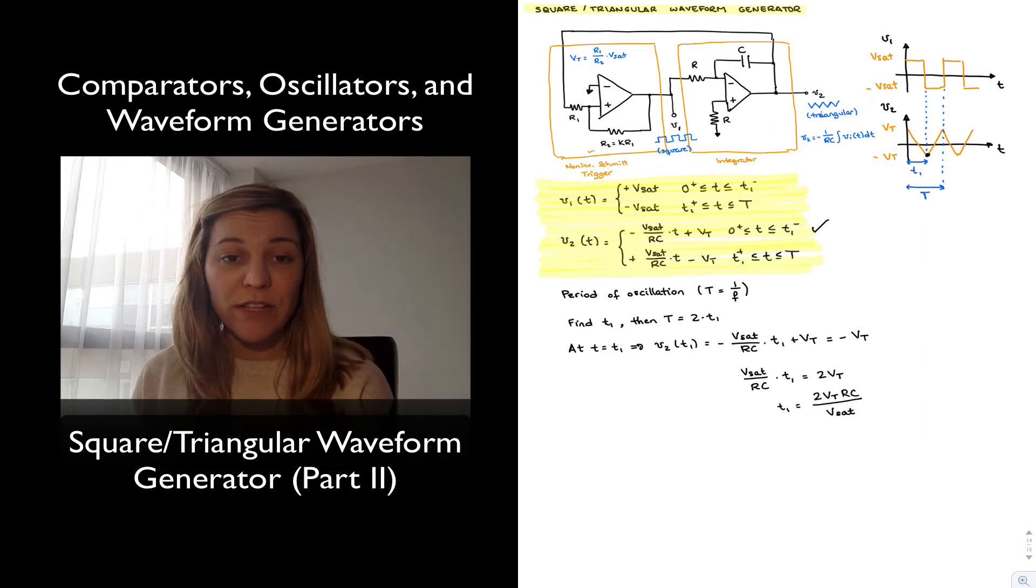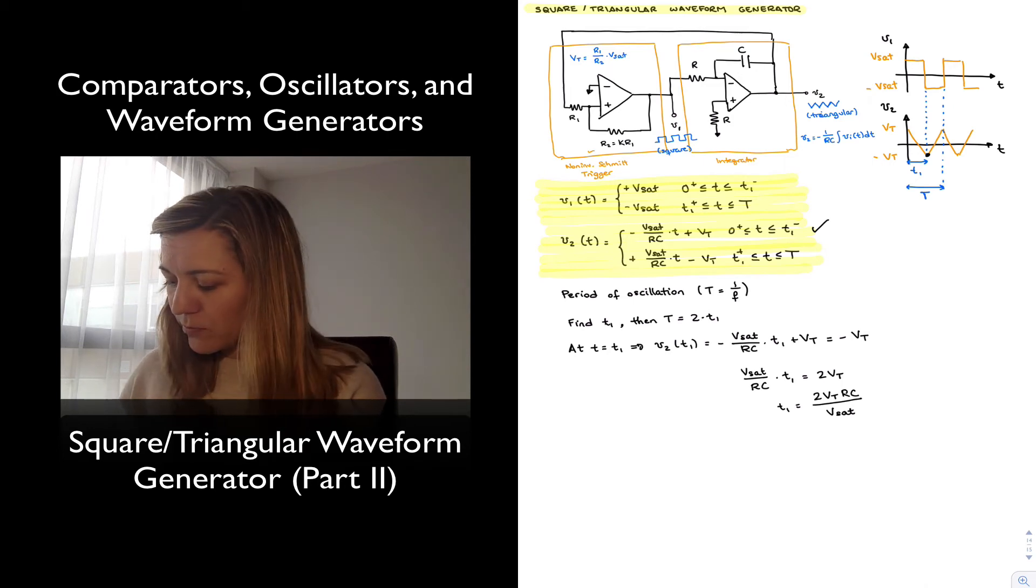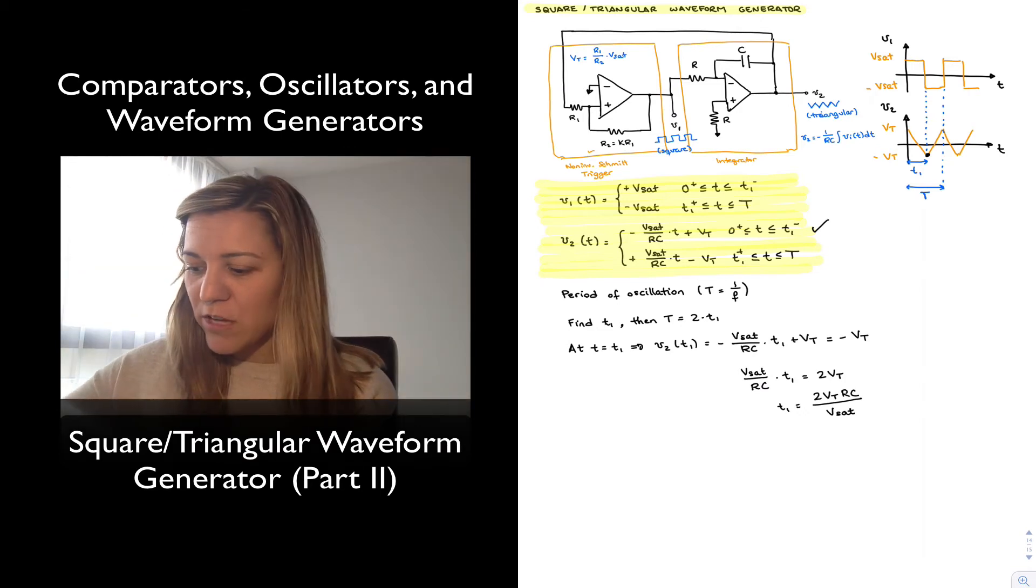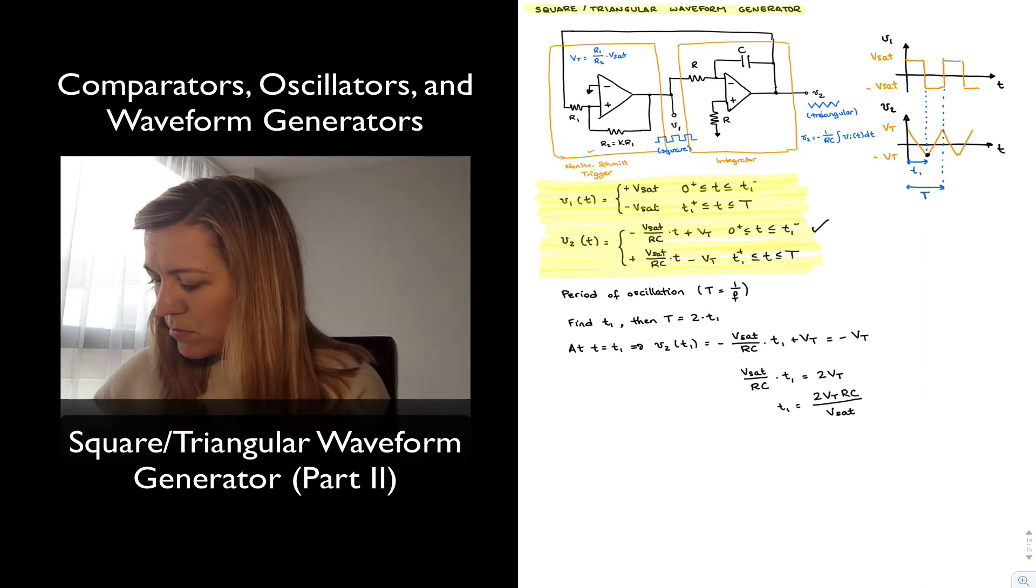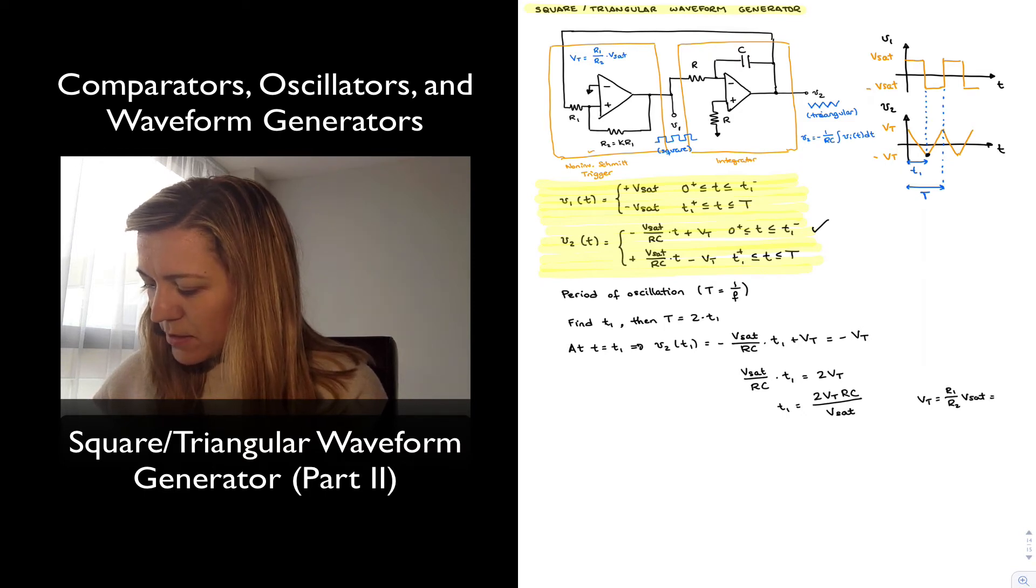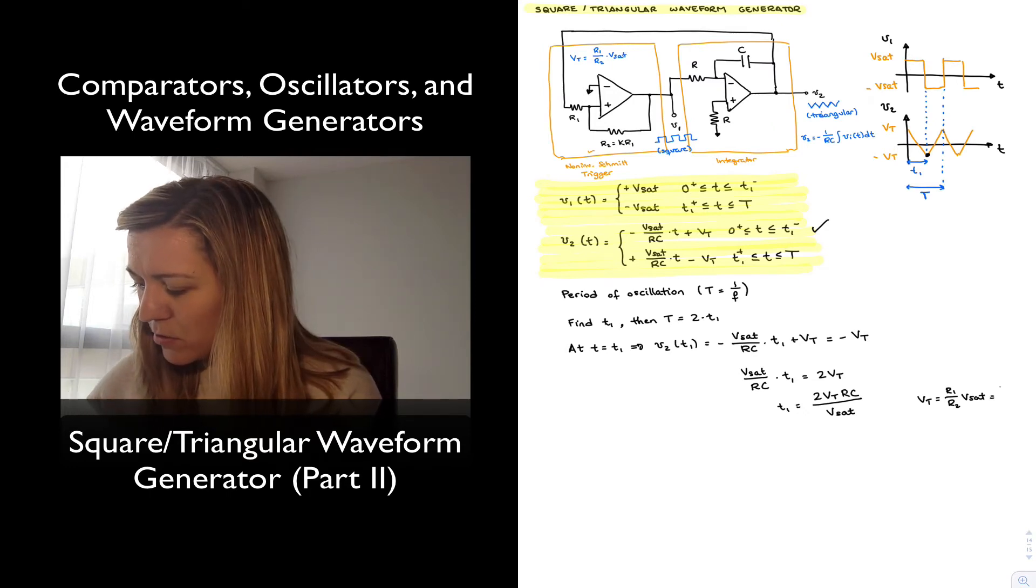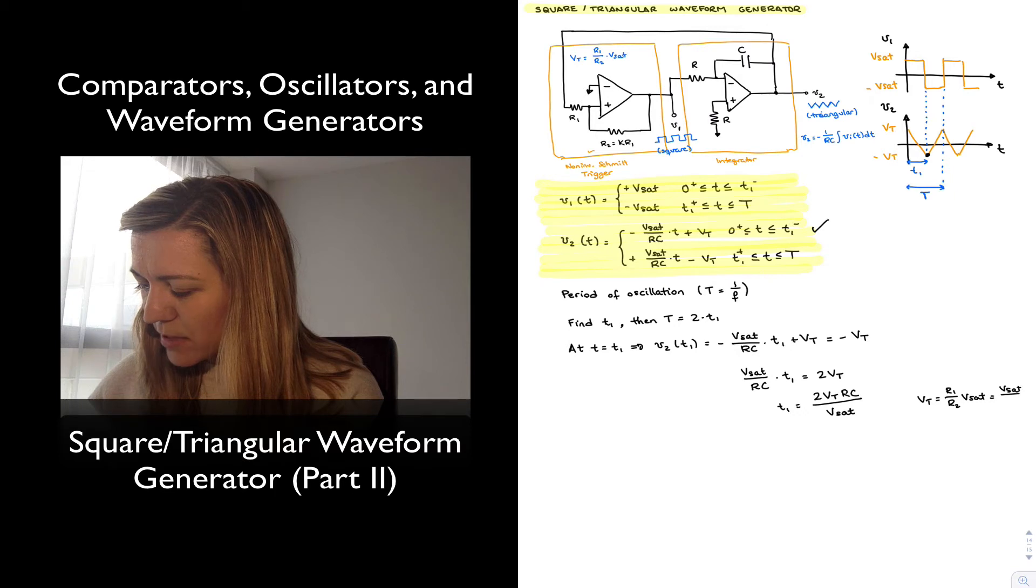If I wanted to simplify this further, I can note that vT is equal to R1 over R2 times vSat, and I can, since R2 is equal to K times R1 in my figure, I can simplify that expression. Noting that vT is equal to R1 over R2 times vSat, and this is equal to, since R2 is K times R1 per the figure, I can also express this as vSat divided by K.